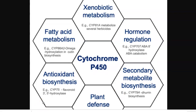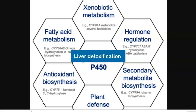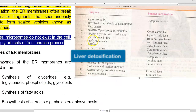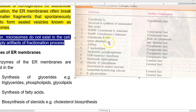Those functions of cytochrome P450 listed are in the context of the plant system. In general, cytochrome P450 also plays a major role in the liver in the breakdown of toxic substances. Apart from cytochrome P450, many other enzymes are localized in the endoplasmic reticulum — some in the cytoplasmic phase, some inside the lumen, and some, like cytochrome P450, in both.